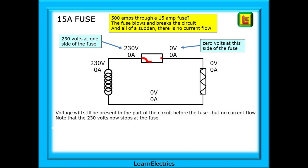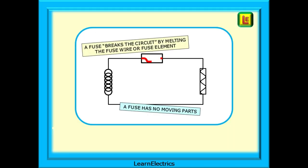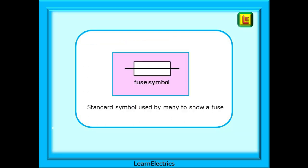Look at the voltages that are present now that the fuse has blown. There will be 230 volts present on one side of the fuse and zero volts on the other side. Be aware of this — just because the fuse is blown and the circuit is dead does not mean that all of the circuit is dead. There will still be 230 volts at certain points. When it comes to fuses, remember that a fuse breaks the circuit by melting the fuse wire or fuse element, and a fuse has no moving parts. This is the symbol for a fuse, with the line through the center indicating the fuse wire or fusible link.